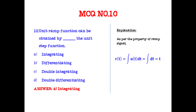The unit ramp function can be obtained by integrating the unit step function. The integral of u(t) dt equals the integral of 1 dt, which equals t. Here t is r(t), the ramp function.